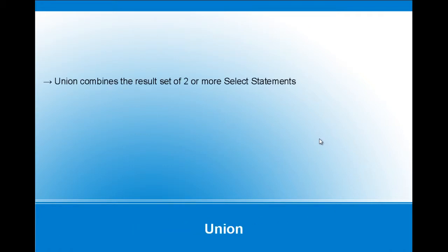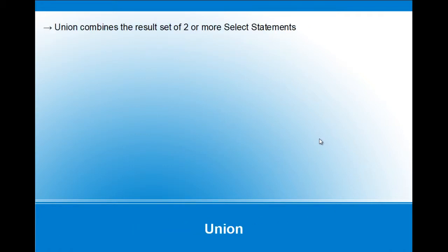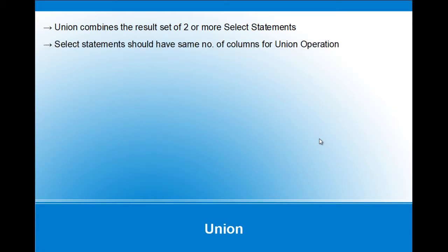UNION basically combines the result set of two or more SELECT statements. The SELECT statements should have the same number of columns for a UNION operation. If there are different numbers of columns in the SELECT statements, it will throw an error.